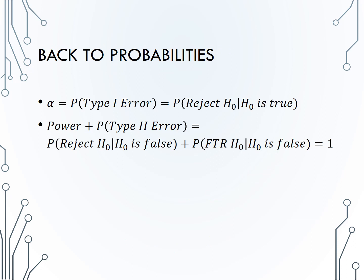However, we can talk about the probability of those types of errors as well. Remember, the significance level alpha was controlling the probability of mistakenly rejecting the null hypothesis. Mistakenly rejecting the null hypothesis actually is a type 1 error, and therefore the significance level alpha is the probability of making a type 1 error, or the probability of rejecting the null hypothesis when the null hypothesis is true. We don't have a notation for the probability of a type 2 error, but note that power — the probability of rejecting the null when the null is false — and the type 2 error rate — the probability of failing to reject the null when the null is false — must add to 1, because we've conditioned on the same event that the null is false, but we have the complementary decisions of rejecting or failing to reject the null.